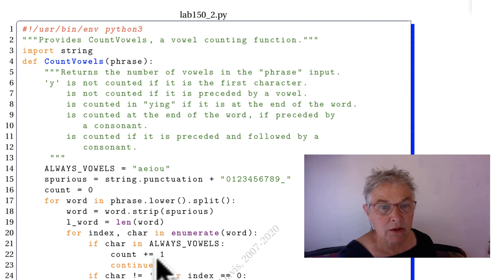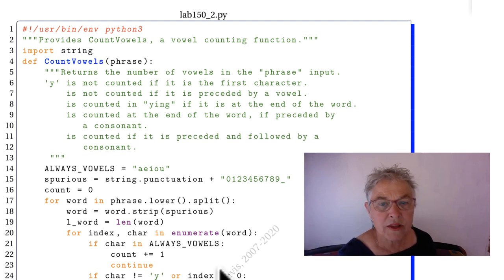Now if the character is in always vowels, then it definitely is a vowel. And we go on, the continue gets the next character.